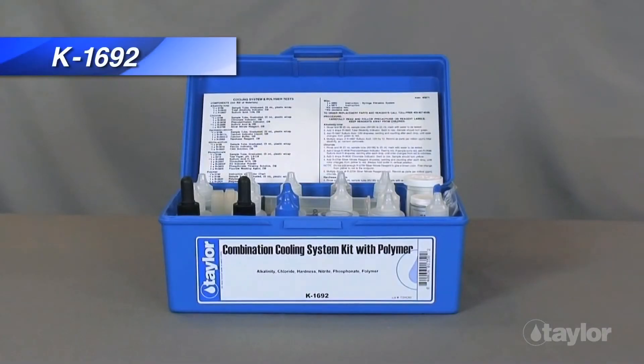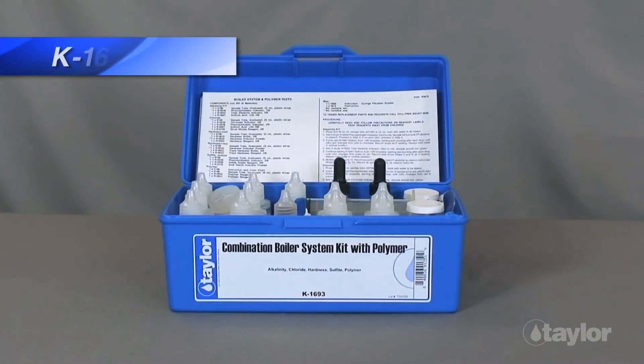The polymer test you just viewed is included in the K1692 combination kit for cooling systems, and the K1693 combination kit for boiler systems.